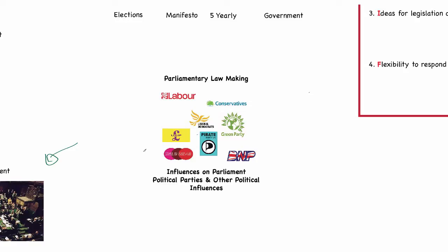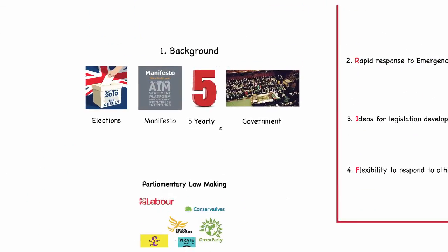Let me start by looking at a little bit of background. I'm going to take it as given that you all know the process of the way in which our governance works. Every five years there is an election to see who will become the next government. During that time, each political party will publish what is known as a manifesto — a list of all of the reforms that that party wants to undertake if they were to become the government. This sets out quite clearly what influence each political party is going to have on Parliament if it becomes the government.